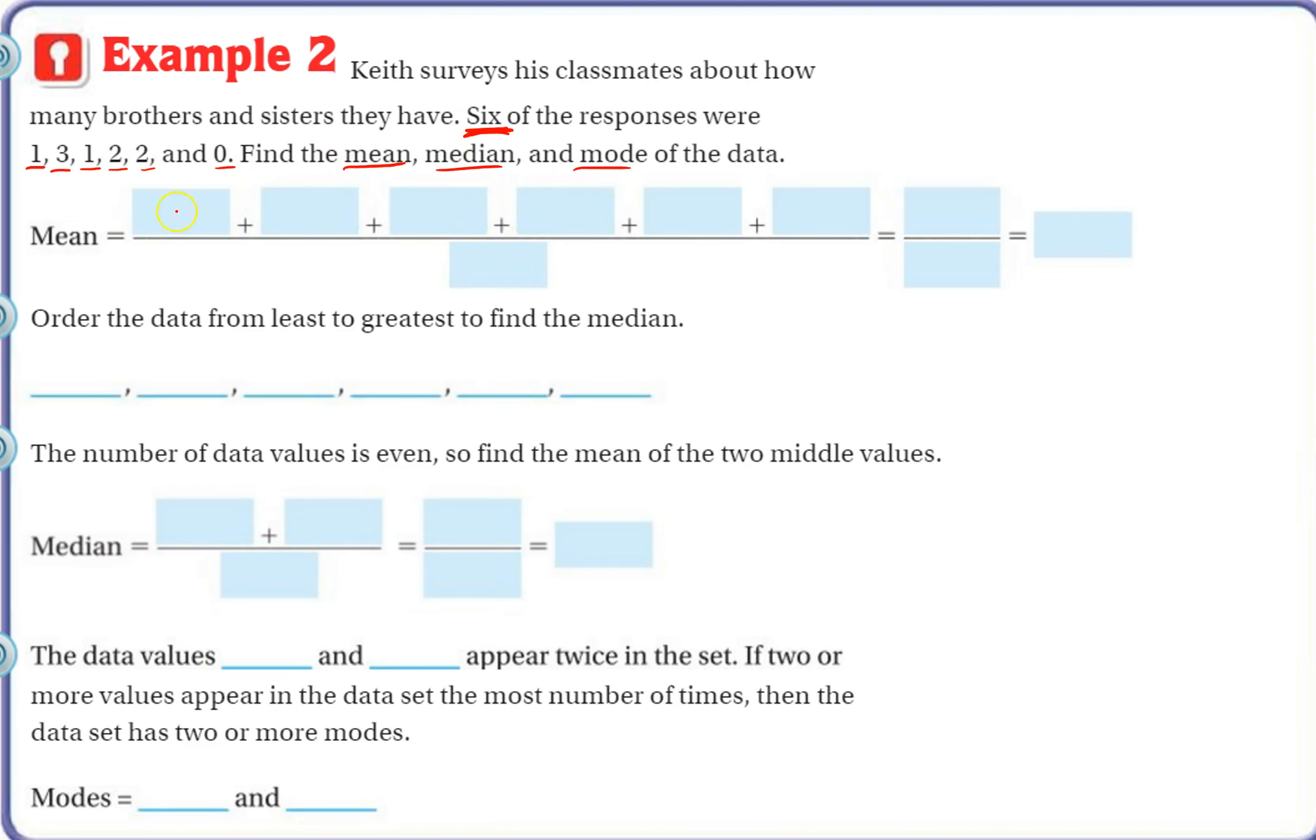So we take all these, to find mean, we take the data sets: 1, 3, 1, 2, 2, and 0. Add those all up, and then we divide by the number of items, six.